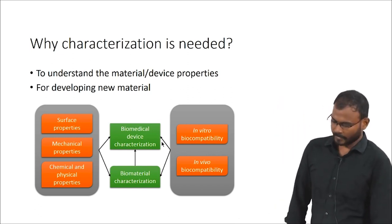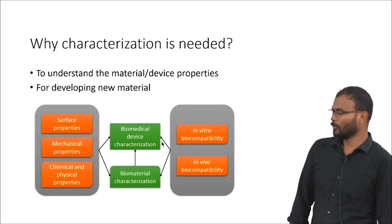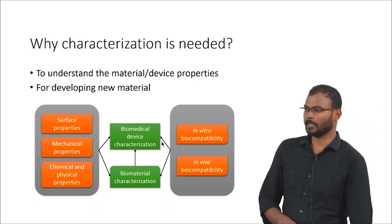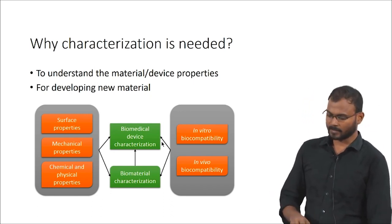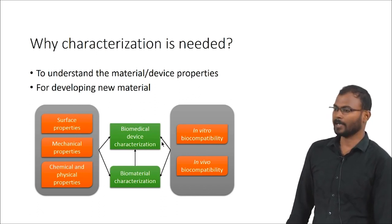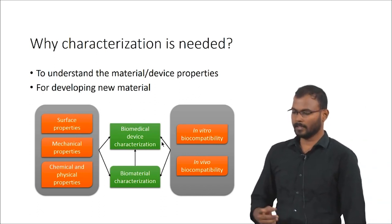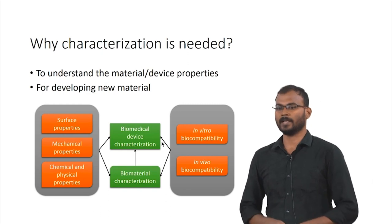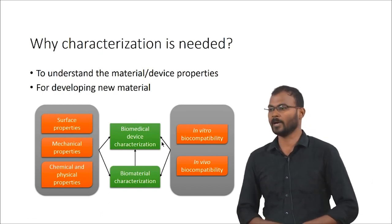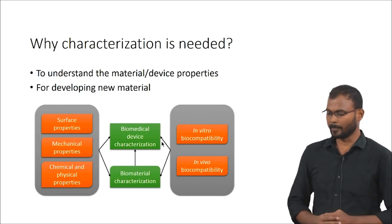Material characterization is primarily divided into two categories. One is based on engineering properties such as surface properties, mechanical properties, and chemical and physical properties. The other is totally dependent on the biological relationship with the material, which includes in vitro biocompatibility and in vivo biocompatibility.